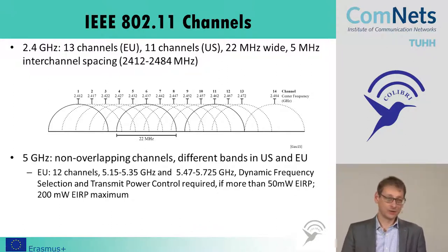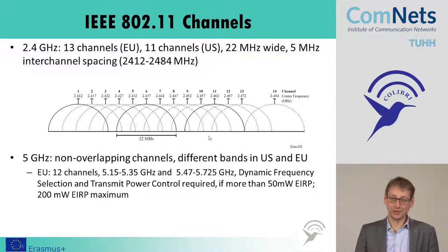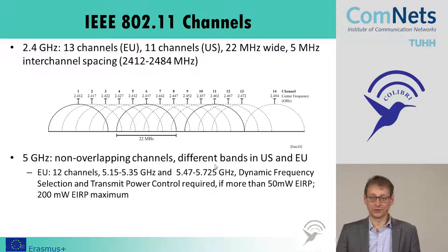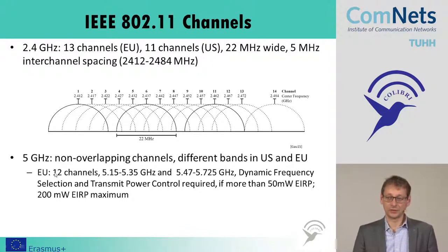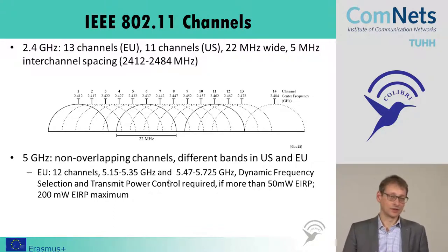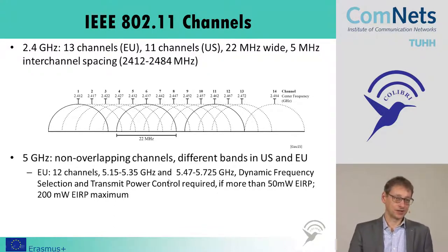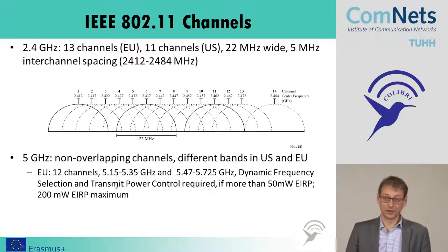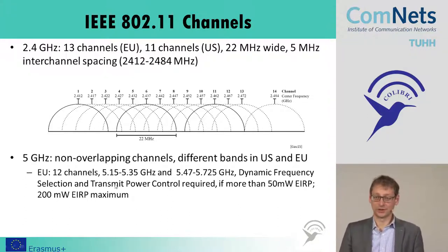In the 5 GHz band we have more frequencies available and non-overlapping channels in different sub-bands. The US and European Union have different bands, but in Europe for example we have 12 channels between 5 and 5.3 GHz. It also has dynamic frequency selection so you can listen to the channel and dynamically select the best frequency, but it also requires power control so as not to interfere with others.